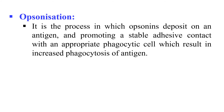Next, Opsonization. It is a process by which phagocytosis is enhanced. During opsonization, molecules called opsonins are deposited on the antigen, and due to these opsonins, the antigen is stably attached to the phagocytic cell, resulting in increased phagocytosis. In simple words, the process by which phagocytosis is enhanced is known as opsonization.